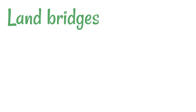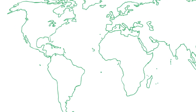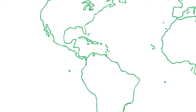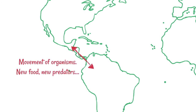Another important idea is land bridges — areas which were once isolated can then become reconnected. A good example is the area around Central America. North and South America weren't always joined through geological history; they were separated, meaning organisms in what we now call North America and South America didn't come into contact. When this land bridge formed, there was new movement of organisms, exposing them to new food sources and new predators — all creating new selection pressures and a new direction for evolution.